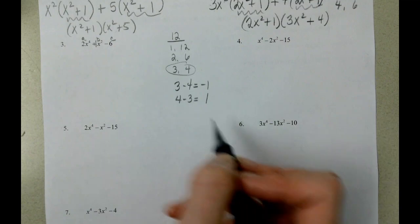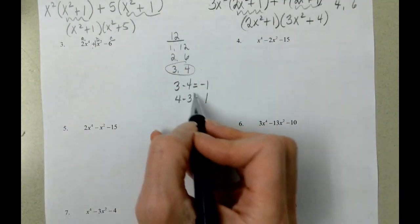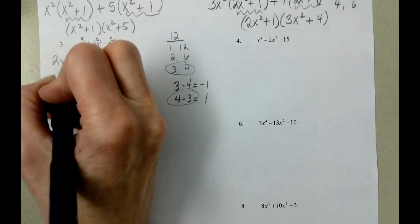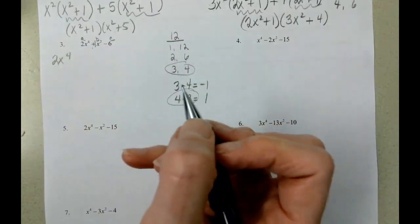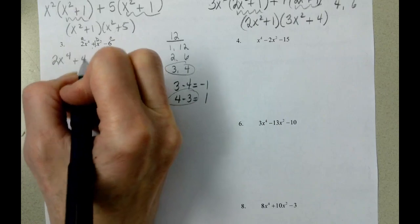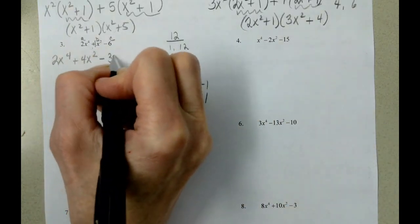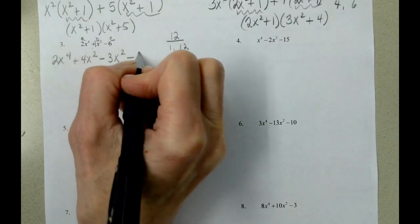So we need to have a positive 1. So it's going to be this one. And when we fill this back in, it's 2x to the 4th, plus 4x squared, minus 3x squared, minus 6.